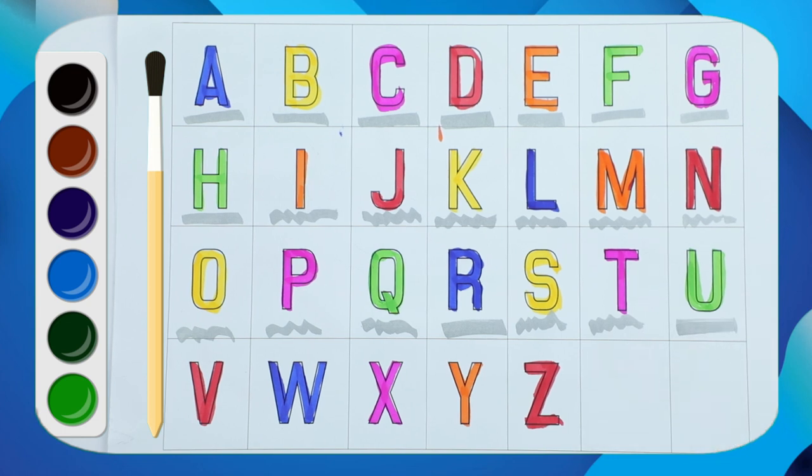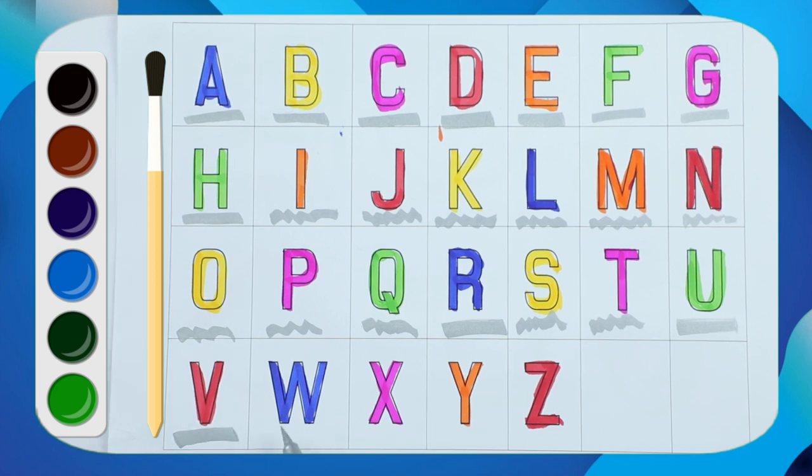Green color U, U for umbrella. Red color V, V for wand. Blue color X, pink color X, X for xylophone.